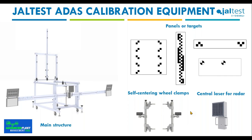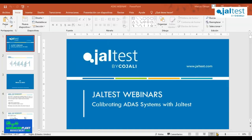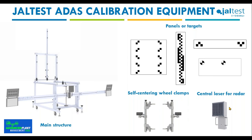The new JALTES ADAS calibration equipment perfectly combines with the JALTES diagnostic software. Let's look at the different parts included: first, the mainframe or structure with mirrors and measuring scales; then the radar calibration laser; the targets for front camera calibration, optimized for different manufacturers; and finally the self-centering wheel connection tool, used to ensure that both the frame and the ADAS calibration panel are perfectly aligned with the vehicle.